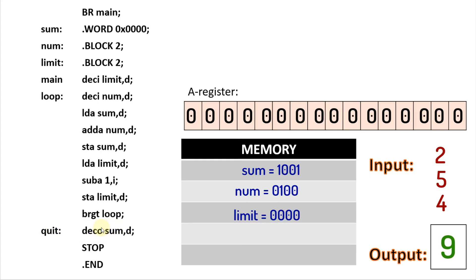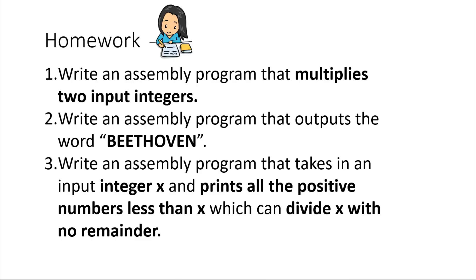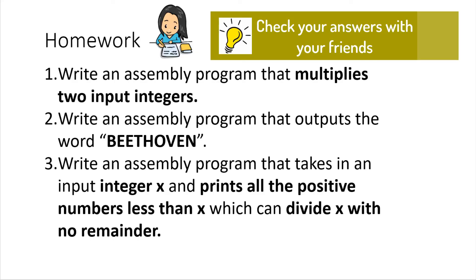In this assembly program, we've seen that we can implement a loop using the branch instruction. We can also implement if statements. Can you imagine how an if statement would operate using the branch instruction? To solidify your understanding of the concepts presented in this lesson, consider doing the following homework exercises: write an assembly program that multiplies two input integers; write an assembly program that outputs the word Beethoven; and write an assembly program that takes in an input integer x and prints all the positive numbers less than x which can divide x with no remainder.